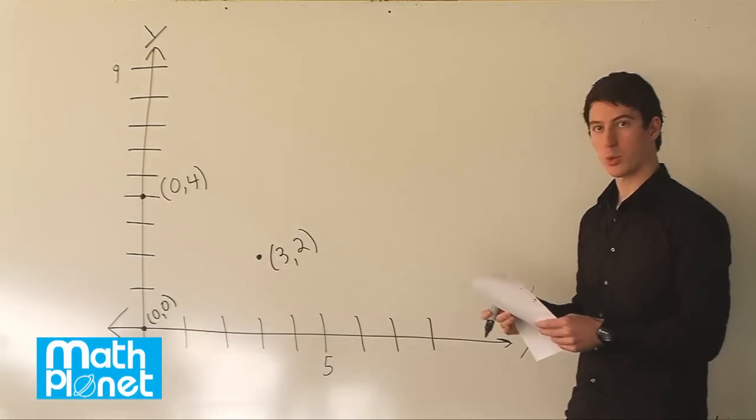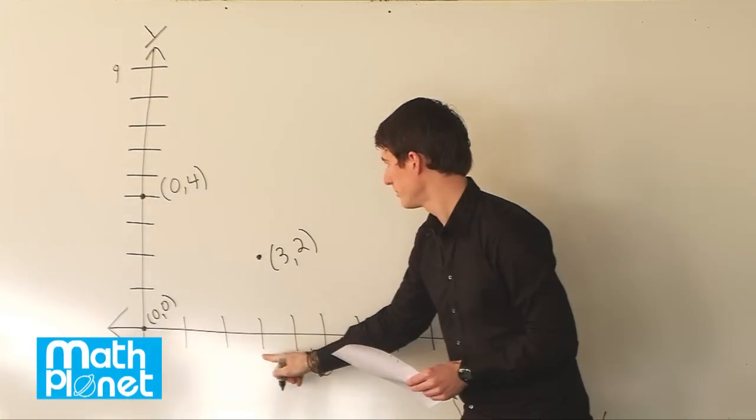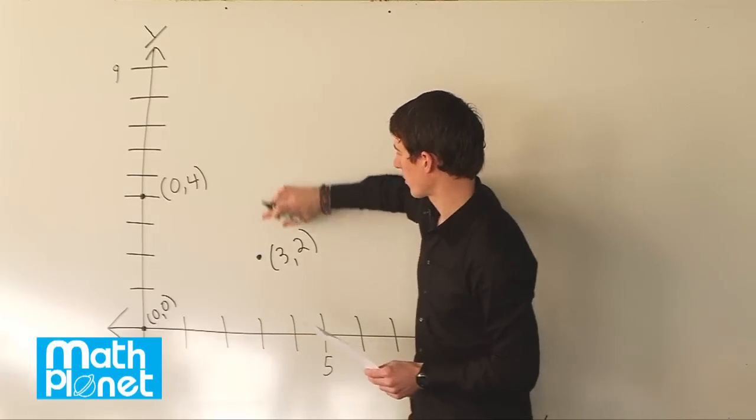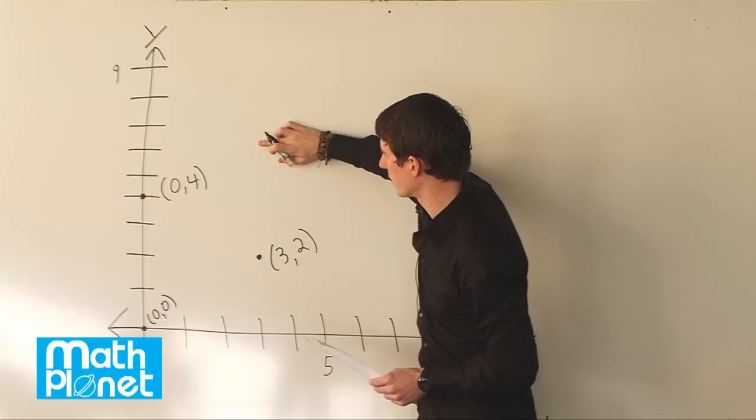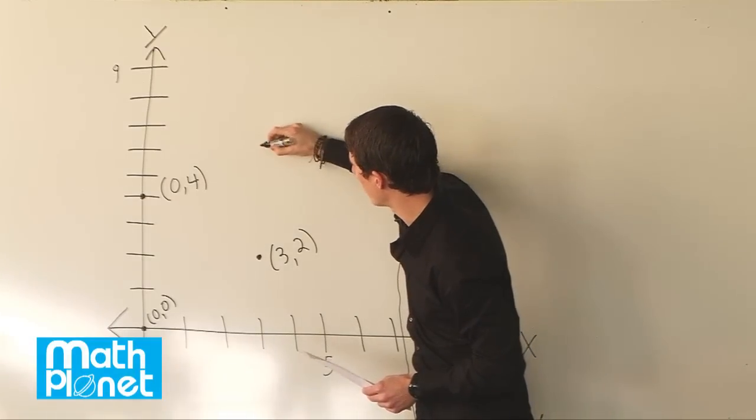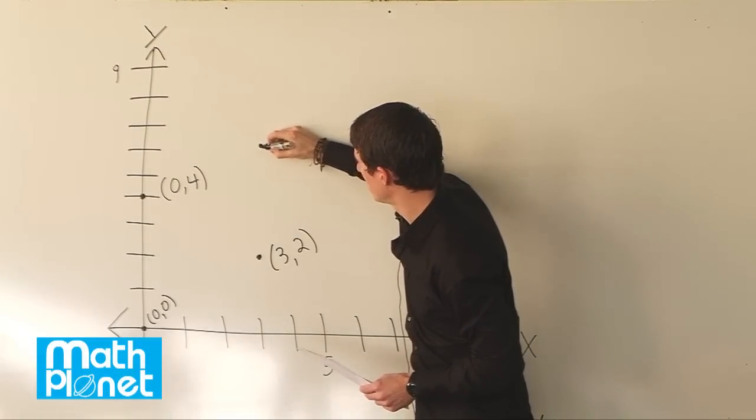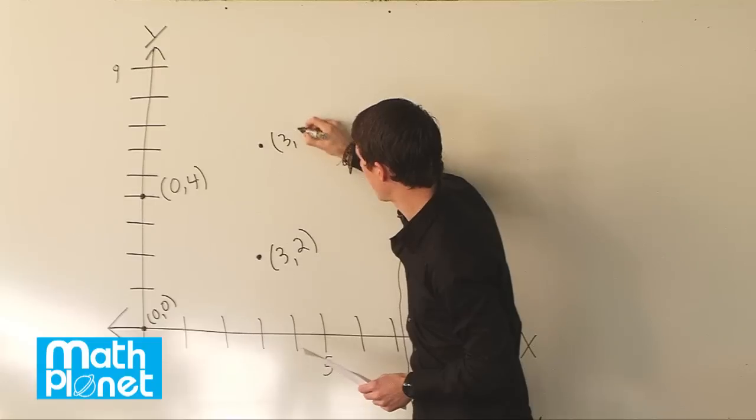Fourth, we have 3, 6. So x is 3 again, and now y is 6. So we're at the same value of x here, but we're up two points from this one. So we have it right about here. That's the point 3, 6.